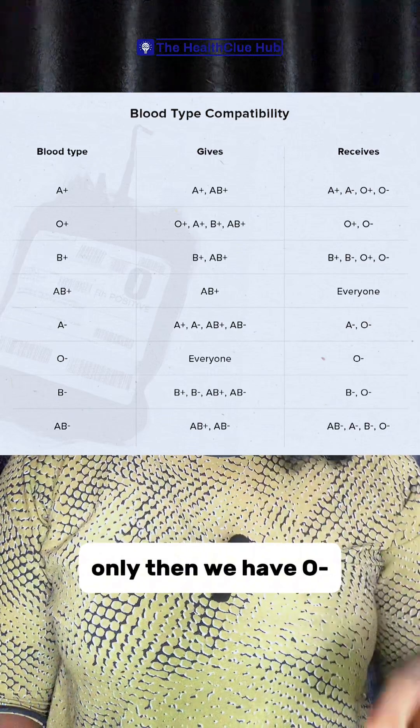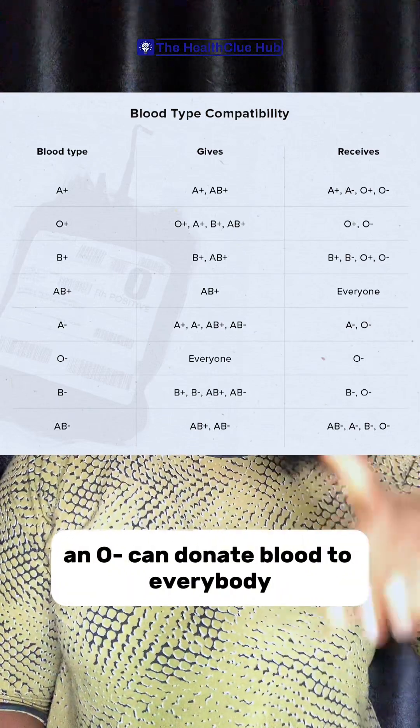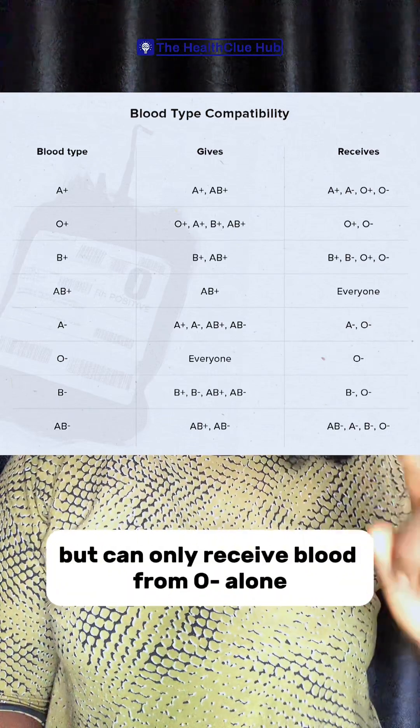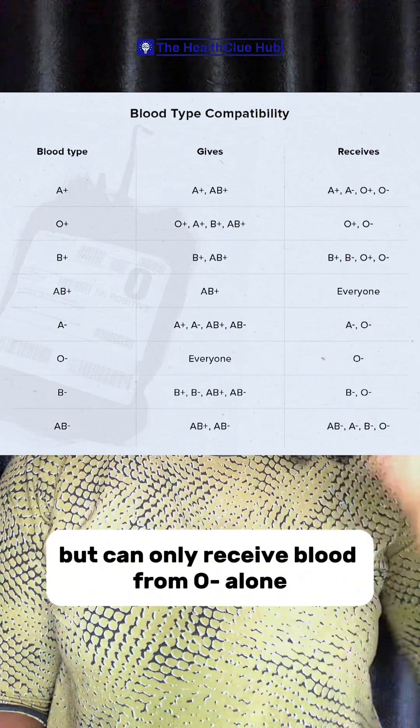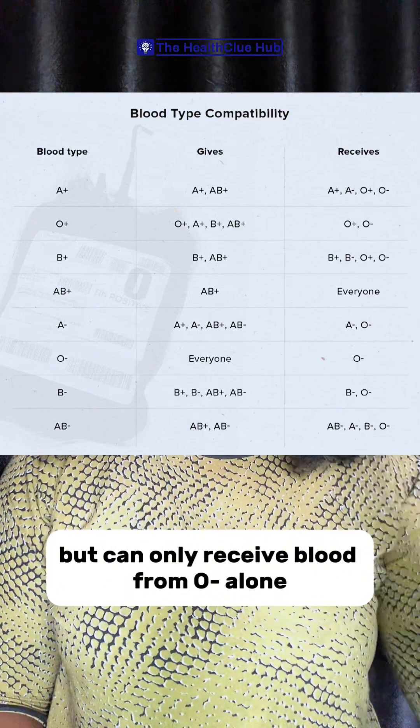Then we have O negative. O negative can donate blood to everybody but can only receive blood from O negative alone.